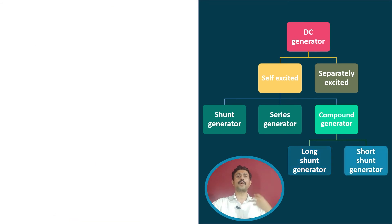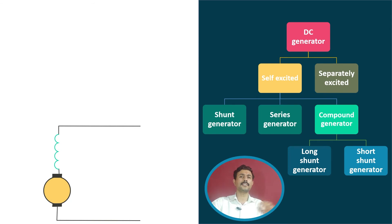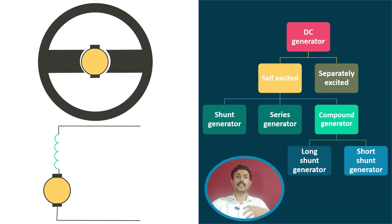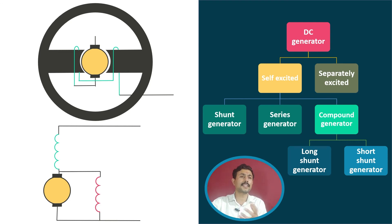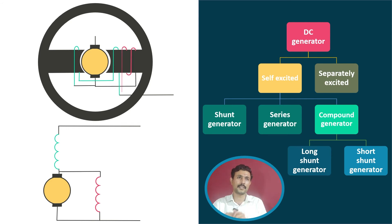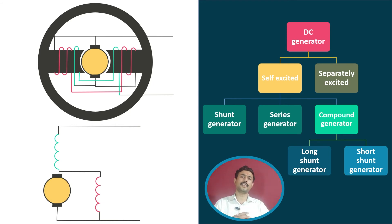Now we'll move towards the short shunt generator. The armature and series field winding are connected in series in the short shunt generator as well. The cross-sectional view is arranged in the same manner as the long shunt generator. The only difference is in the other half of the field winding — in the short shunt generator, the shunt field winding is connected in parallel to only the armature winding, not the combination. You can see this in the cross-sectional view in this manner. So this is the circuit diagram and cross-sectional view of the short shunt generator.